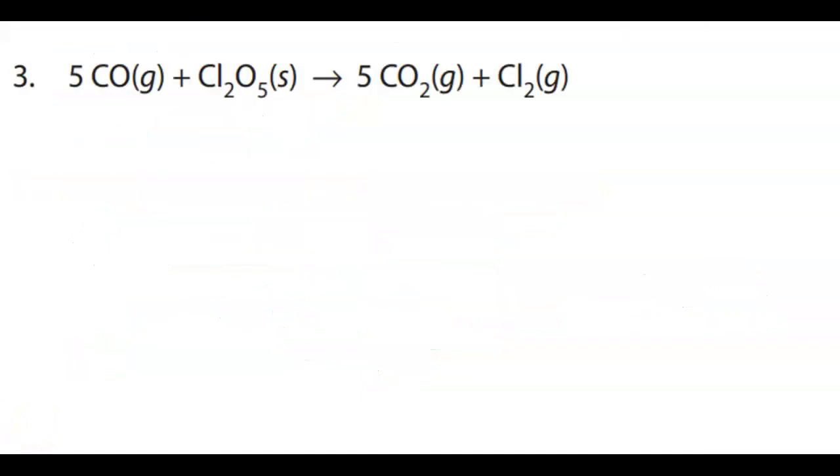Okay, so the next one here, we have carbon monoxide. So oxygen is negative two. Carbon has to be positive two because it adds up to zero. Oxygen is negative two. So that's negative 10. So that means each chlorine is plus five for that to add up to zero. Here we have negative two for the oxygen, and then this has to be plus four to add up to zero, and chlorine is in its elemental state.